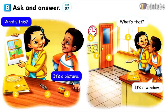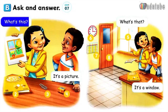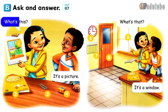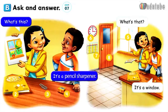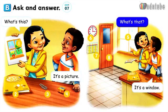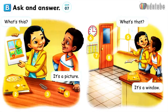What's this? It's a picture. What's this? It's a workbook. What's this? It's a paperclip. What's this? It's a pencil sharpener. What's that? It's a window. What's that? It's a clock. What's that? It's a calendar. What's that? It's a door.